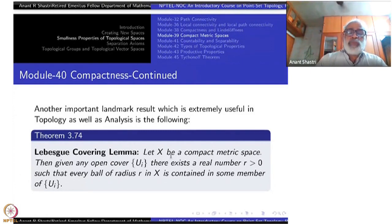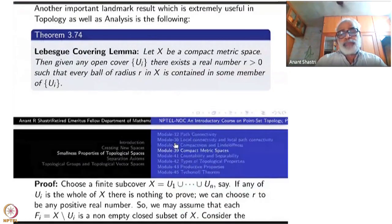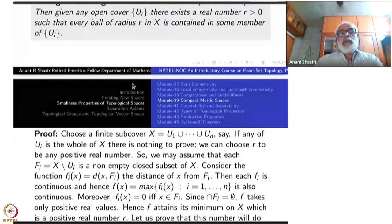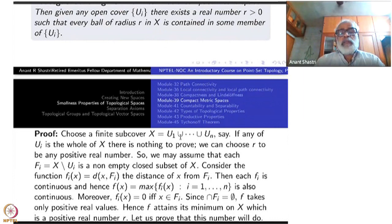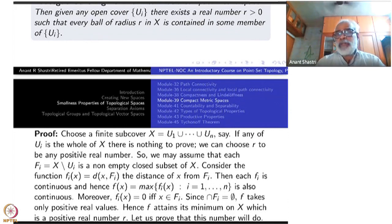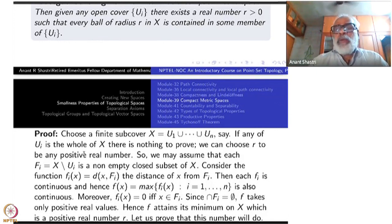So let us have a proof, which is not at all difficult. As soon as you have an open covering and X is compact, there is a finite covering: X is contained inside U_1 ∪ U_2 ∪ … ∪ U_n, where the U_i's come from the given open covering. If one of the U_i's is the whole of X, then there is nothing to prove — you can take R to be any number and every ball of radius R will be contained inside X.